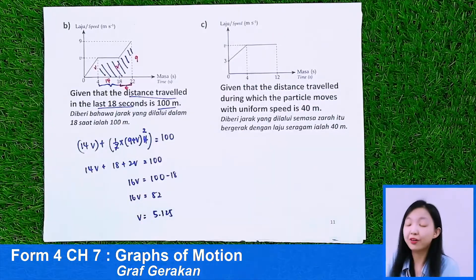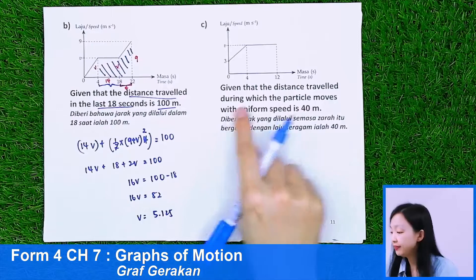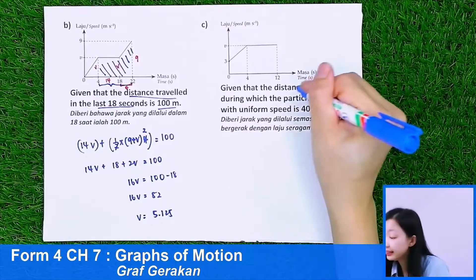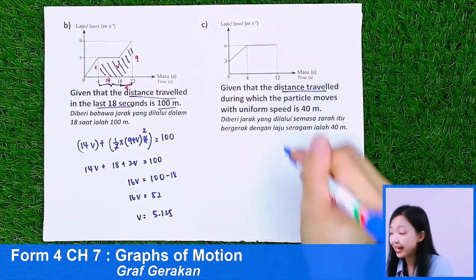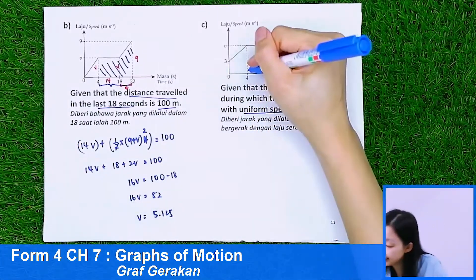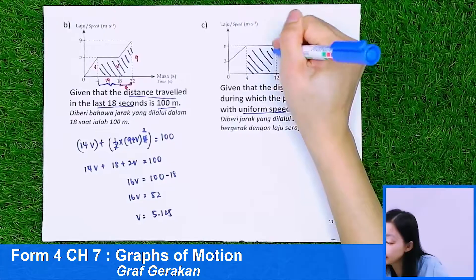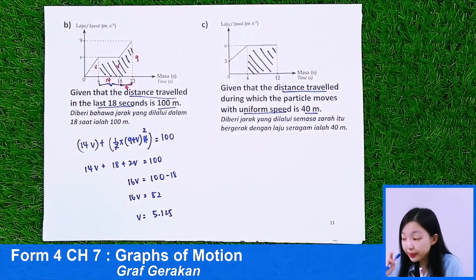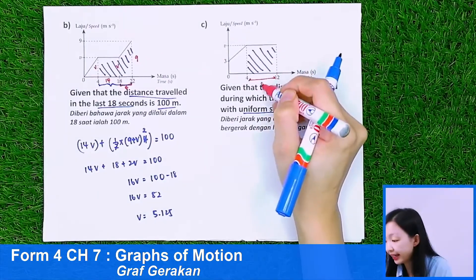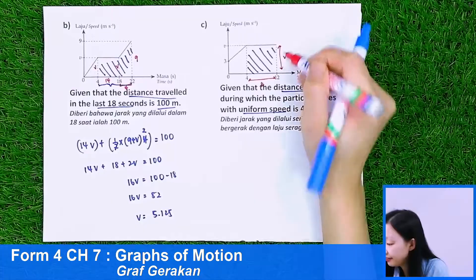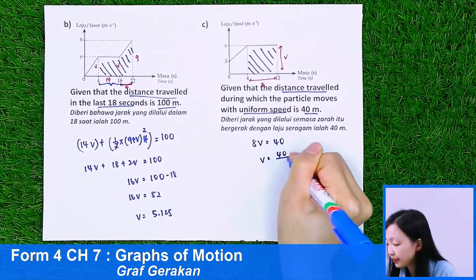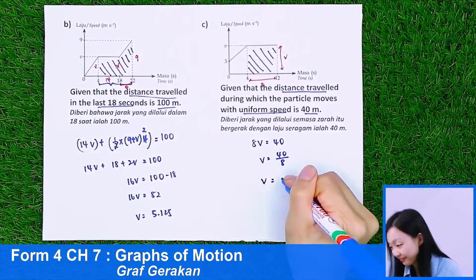Part C: Given the distance traveled during uniform speed is 40 meters. The uniform speed section is from t equals 4 to t equals 12, so the length is 8. Area equals 8 times V equals 40, so V equals 40 divided by 8, which equals 5.